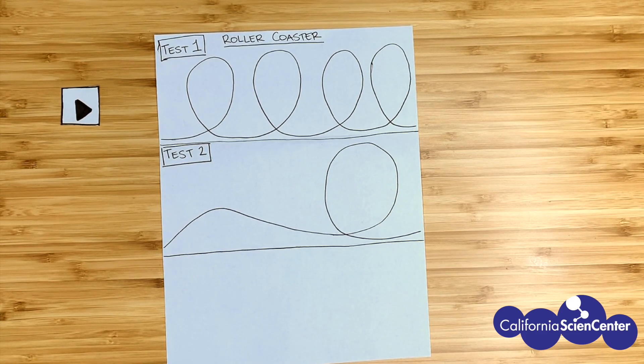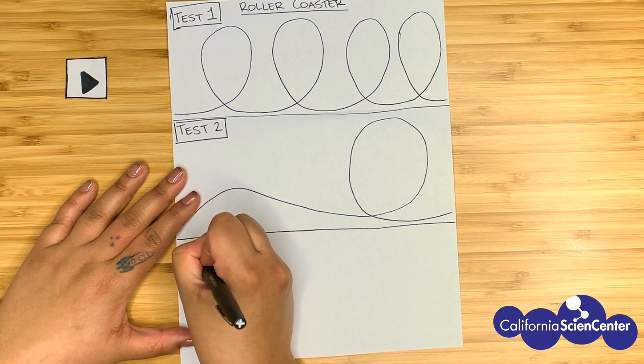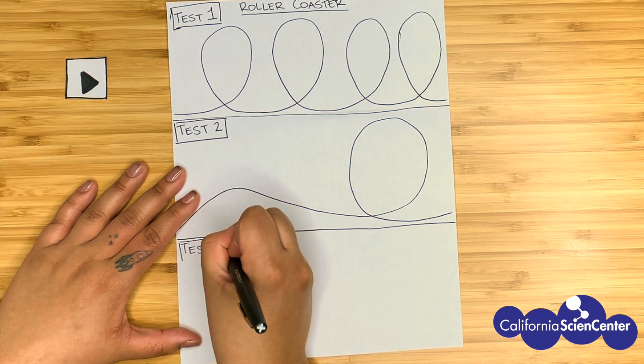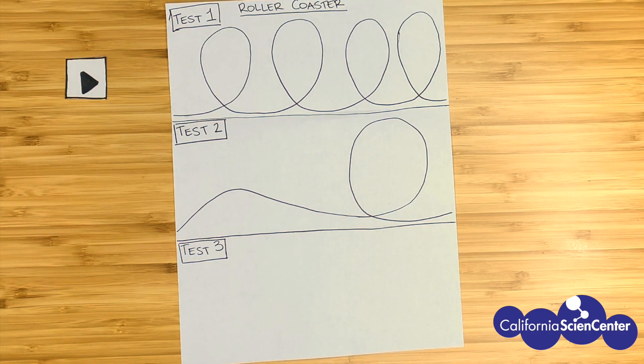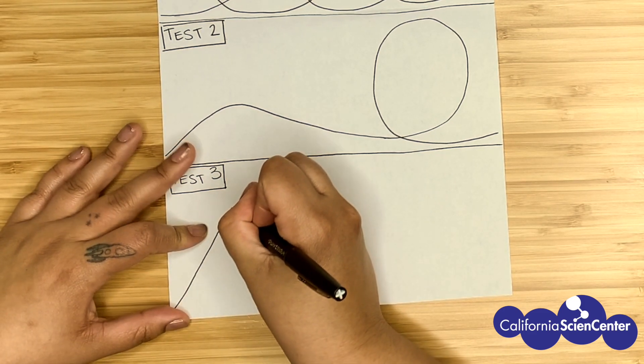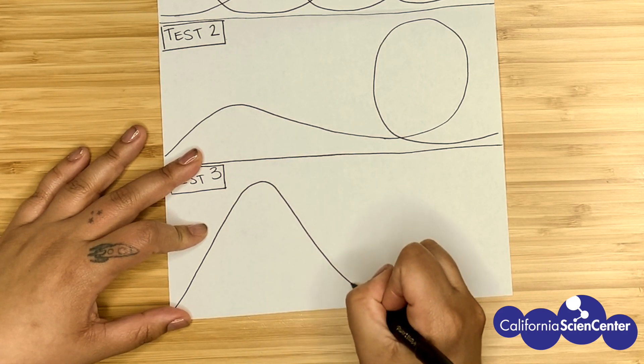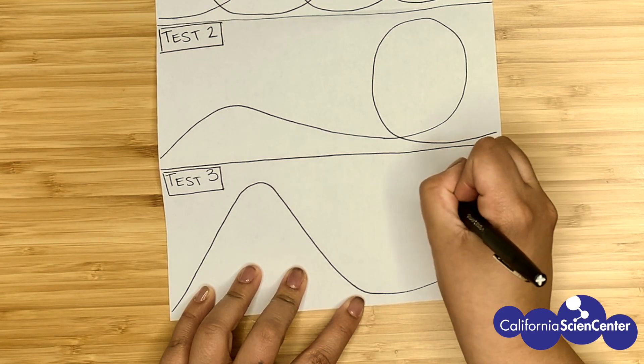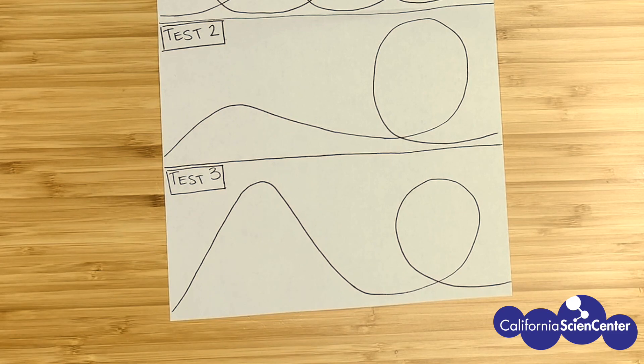Remember, as we do our prototypes, we're learning. So in this third test, I actually did a little research and realized that we had the right idea with the incline. But what we need to do this time is make our incline taller. If you notice, my incline is actually taller than my loop. This should give us enough energy to complete our roller coaster.